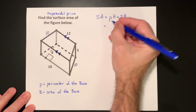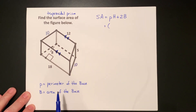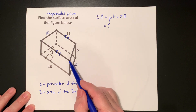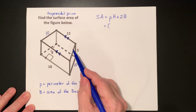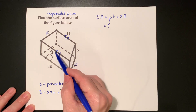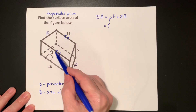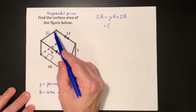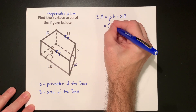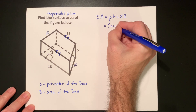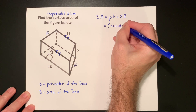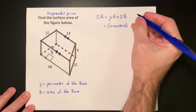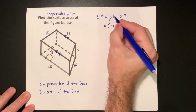The perimeter, if we add up the sides of the trapezoid, we have a 12, then we have this side which is 10, and then this side which is 18, and then this side of 10. So we have 12 plus 10 plus 18 plus 10, times the height.